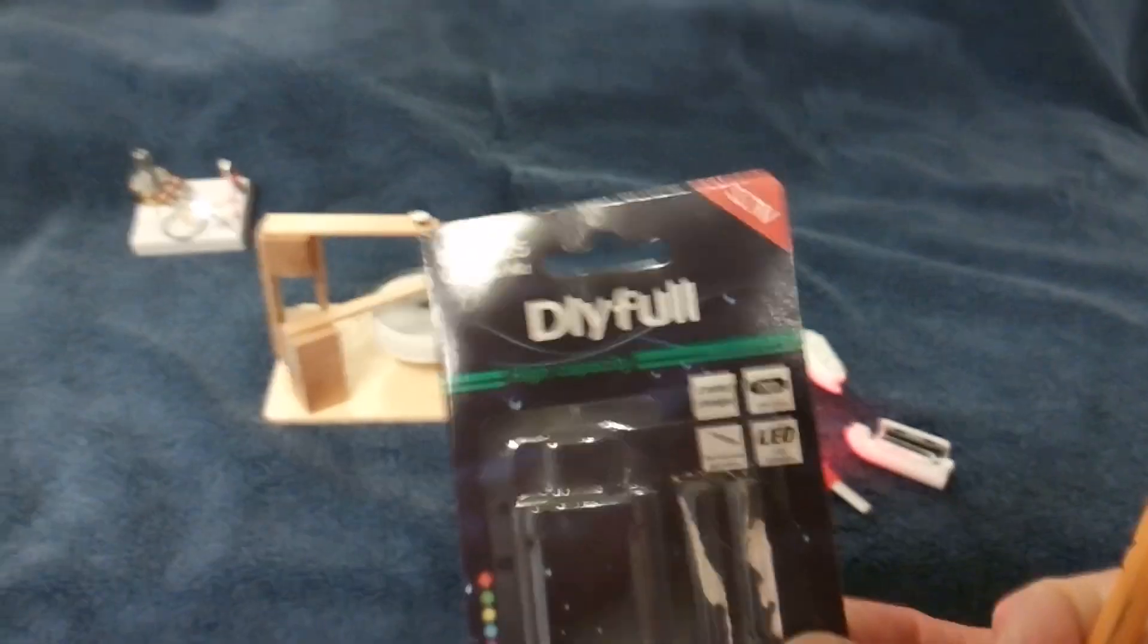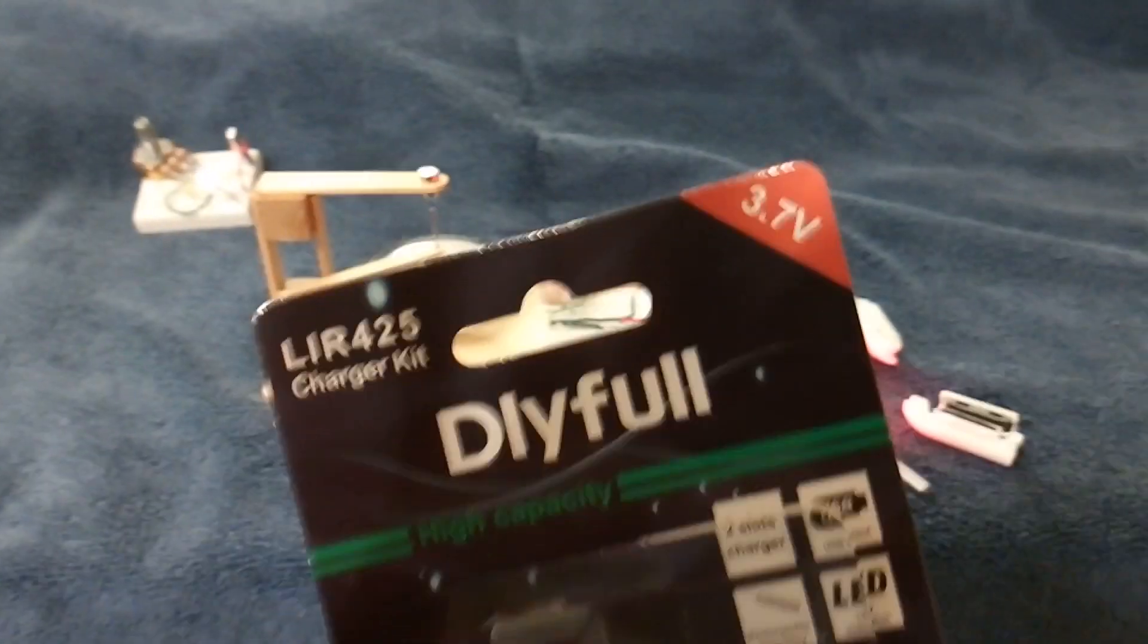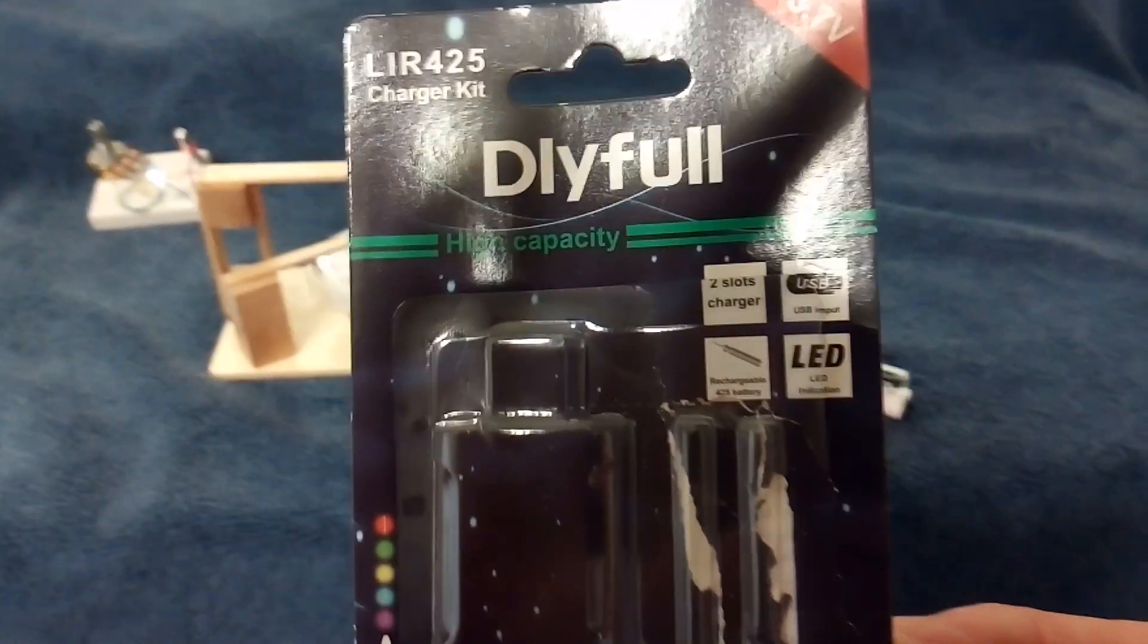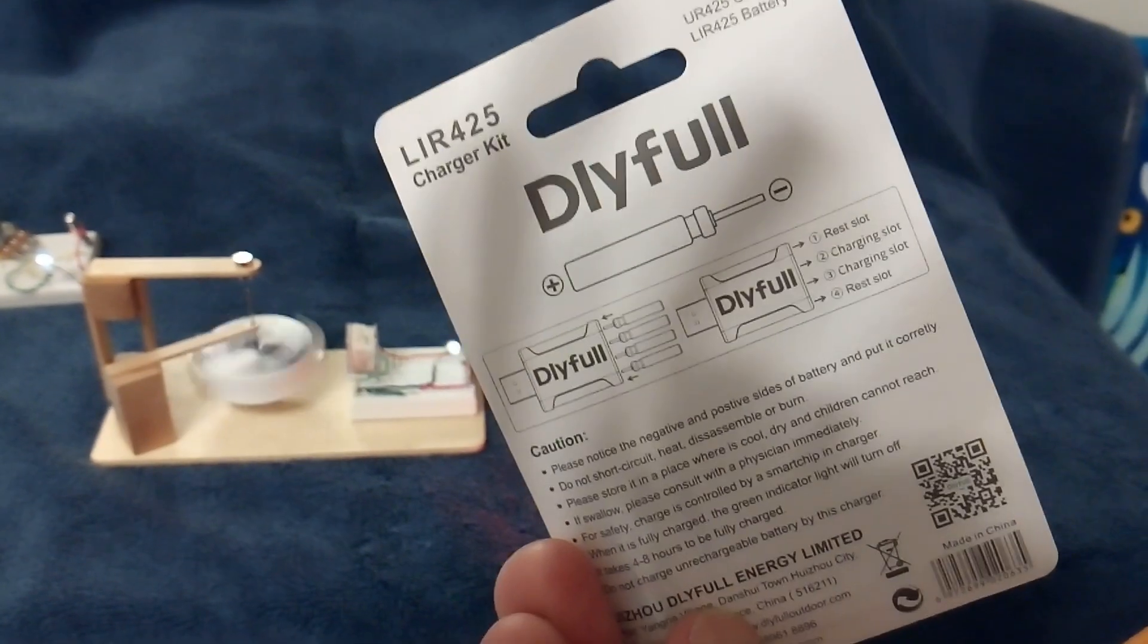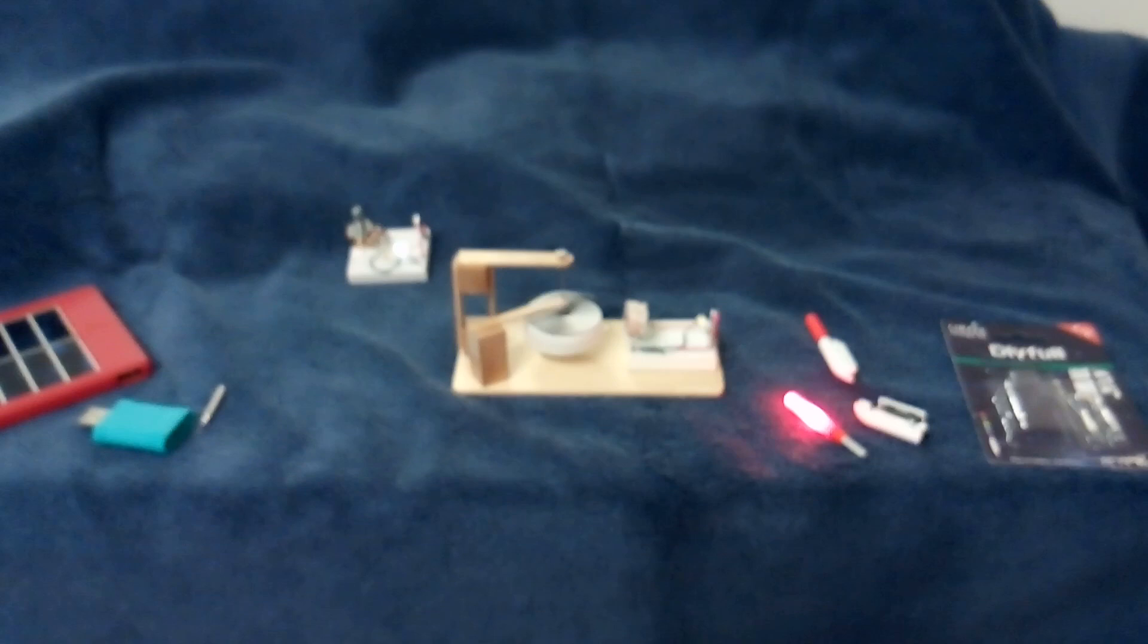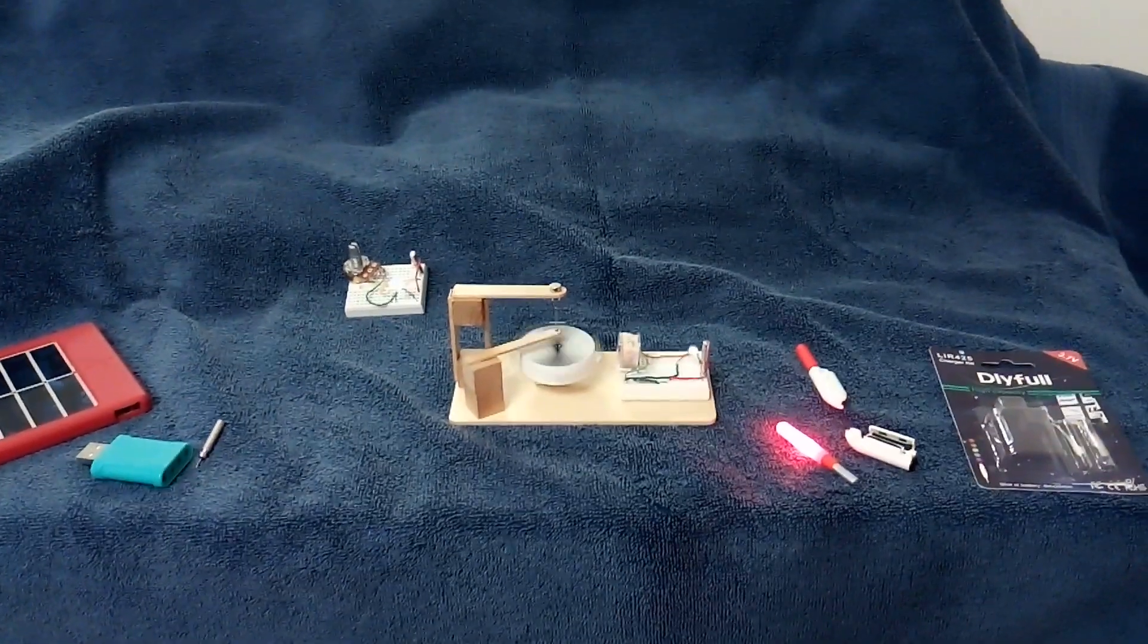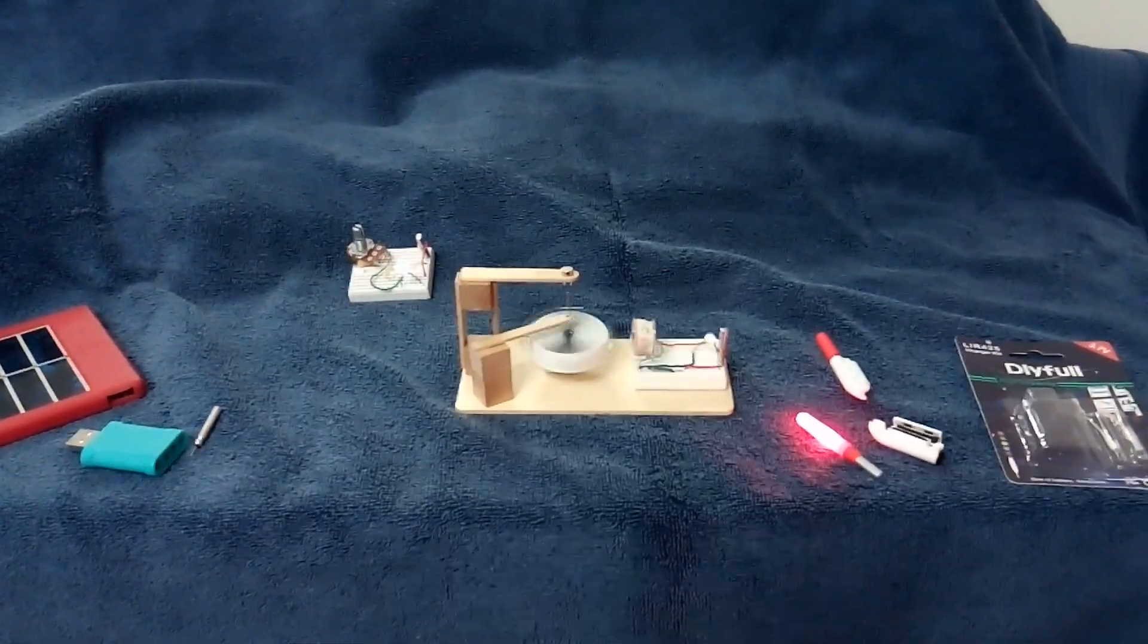So anyway, I recommend you go to the Big Clive video on this thing. He gives a real good overview—there's different manufacturers and stuff. But there's the battery right there: LIR425. It's a 3.7 volt rechargeable lithium battery and you can go online and look up the specs on it. Really good find. Thanks to Big Clive for showing what an interesting little battery this is.